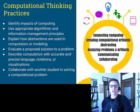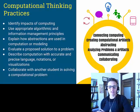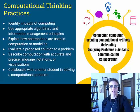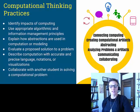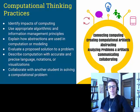Besides the seven big ideas, there are also six computational thinking practices. By the end of the course we want you to be able to connect computing to other areas, create computational artifacts, think abstractly, analyze problems and artifacts, communicate about computer science, and collaborate with others. Examples include identifying the impacts of computing, using appropriate algorithmic and information management principles, explaining how abstractions are used in computation or modeling, evaluating a proposed solution to a problem, describing computation with accurate and precise language or visualizations, and collaborating with another student to solve a computational problem.